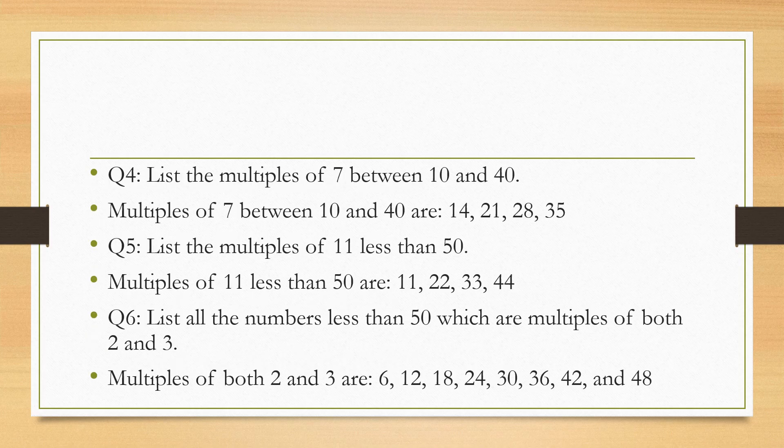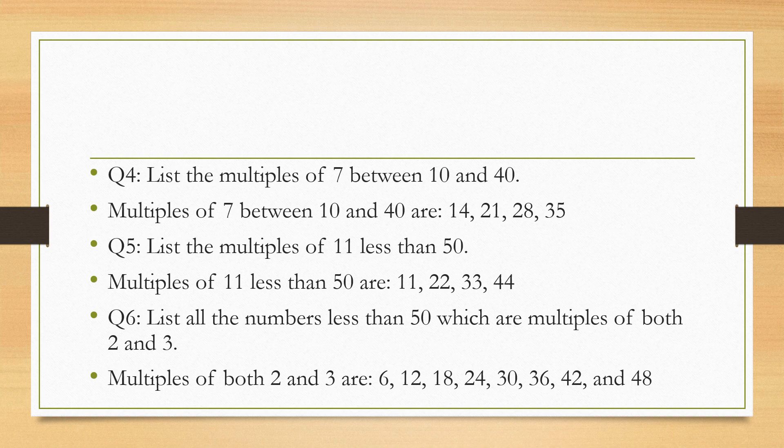Question number 4: list the multiples of 7 between 10 and 40. Now we have to read the table of 7 in our head and write the numbers between 10 and 40, so it is 14, 21, 28, and 35.